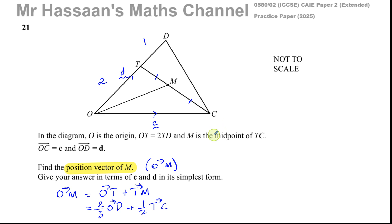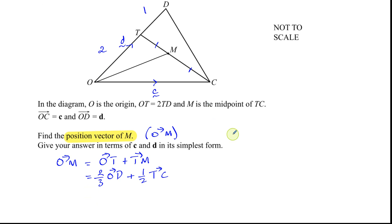So we can now start filling in some of this. So two thirds of O to D, O to D is just the vector d, so that's two thirds of d, plus a half of T to C. If I want to go from T to C, I've got to go minus two thirds of d, plus c. Or I could even go plus one third of d, but then I have to find T to D to C. So it's going to be more hassle.